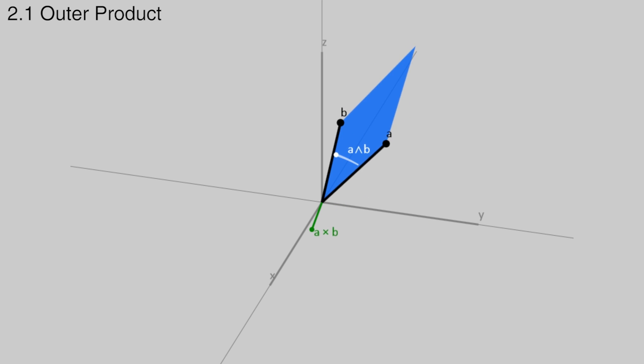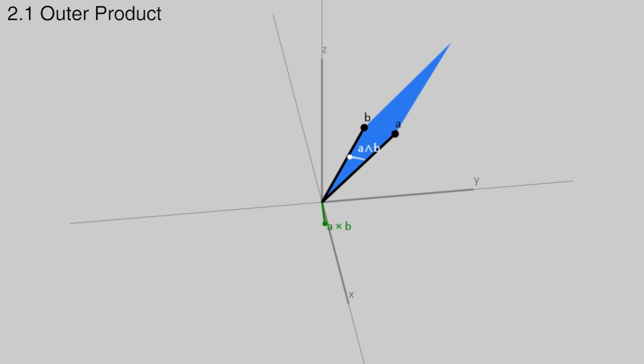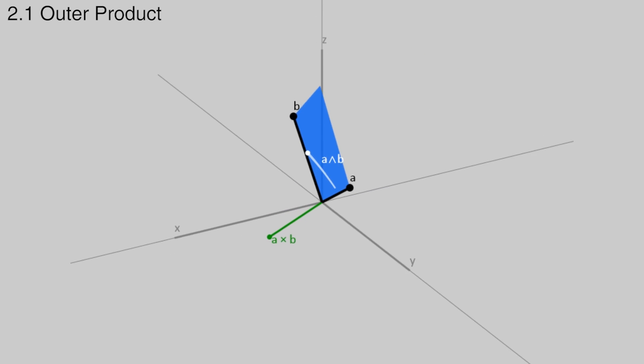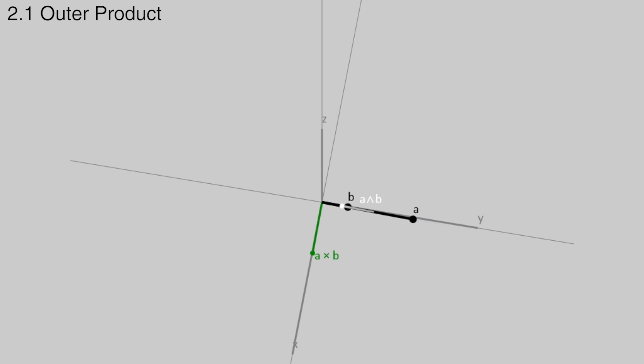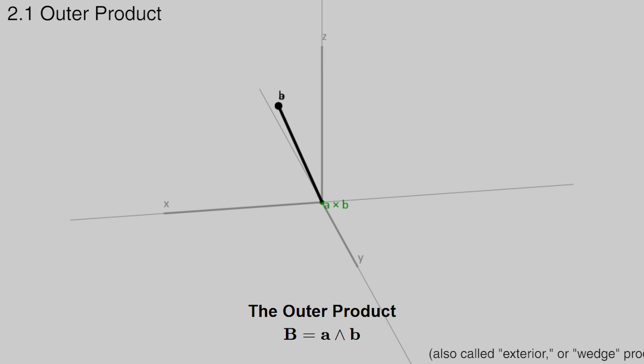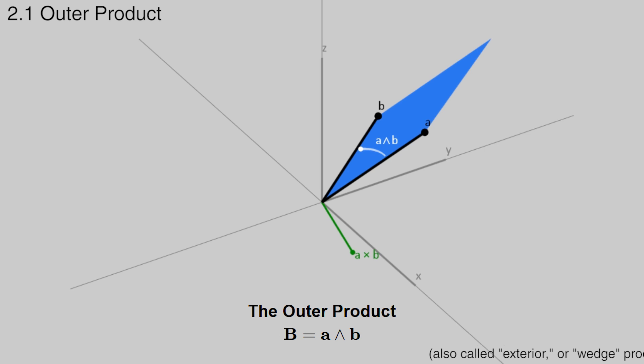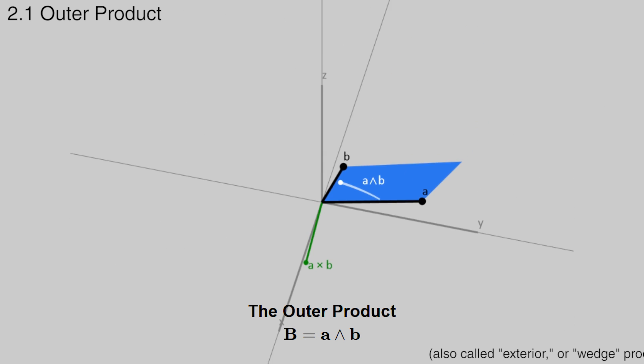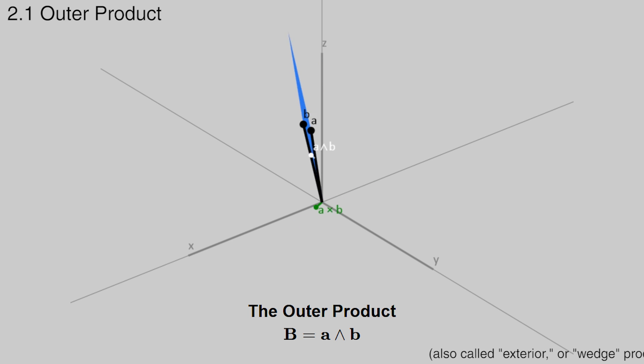To compute the axis of rotation to rotate one vector a to another vector b, we take the cross product of the two vectors to get a vector that is perpendicular to both. But why leave the plane, since the rotation is fundamentally a 2D thing? Instead, we take what is called the outer product of the two vectors, building a new element called a bivector that represents the plane the two vectors form together. If the cross product creates the normal vector to a plane, the outer product creates the plane itself. Taking the normal to the plane is extraneous.